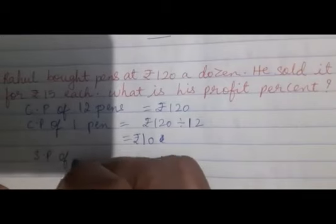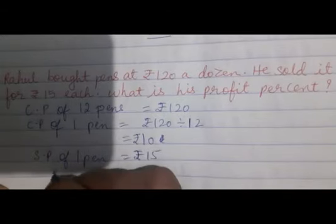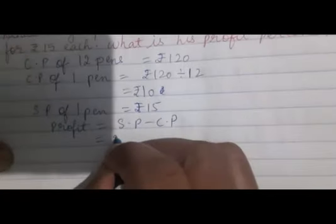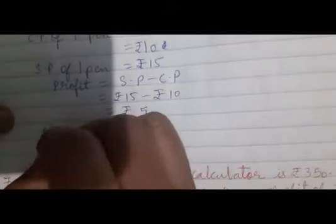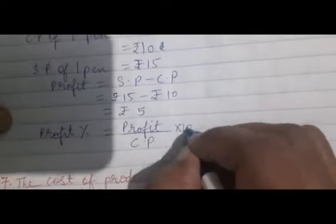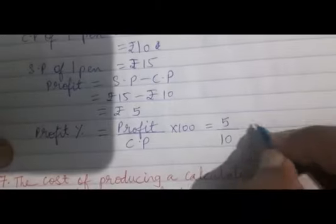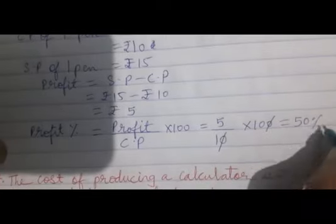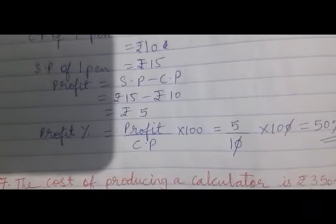Selling price of one pen is Rs.15. It is a profit. Profit equals selling price minus cost price, which is Rs.15 minus Rs.10, that is Rs.5. Now we find the profit percentage. The formula is profit upon cost price multiplied by 100. That's Rs.5 upon Rs.10 multiplied by 100, which equals 50%. Thank you.